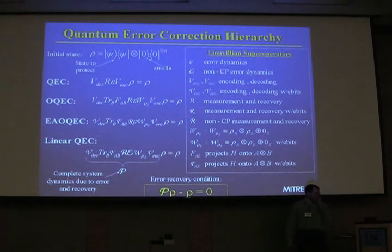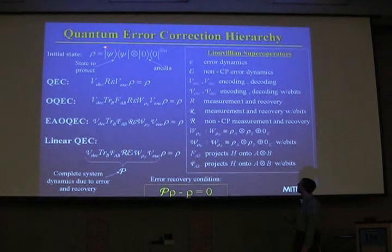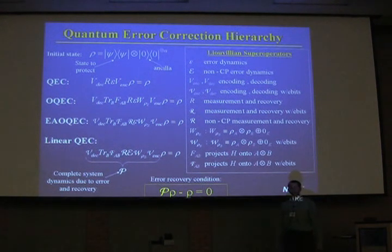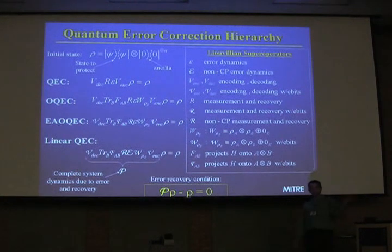Let's start with quantum error correction and the hierarchy of quantum error correction. Starting with our initial state — some quantum information we'd like to protect with ancilla — from now on, at least for this slide, I'm going to be in Liouville space: a space where density matrices are our vectors and super operators are our matrices. This saves us from writing things on both sides.